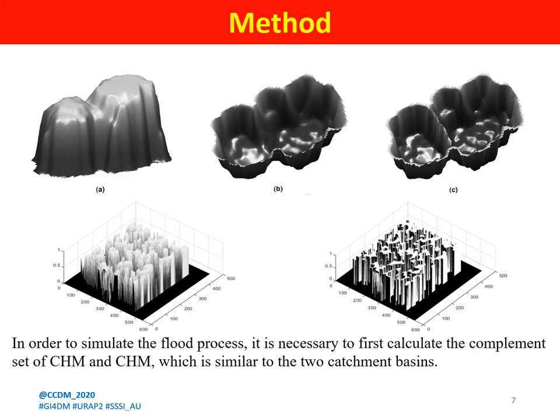We can see figure A shows a CHM model. To simulate the processing of flooding, we first calculated the complement of the CHM as figure B, which resembles two catchment basins. Assume that each basin has a hole punched at its minimum, then we immerse it gradually into water. The catchment basins will be flooded. This algorithm can be thought to automatically build dams along the dividing lines to prevent water from entering neighboring catchment basins, as shown in figure C. The constructed dams are called watershed lines and will be used to partition trees.